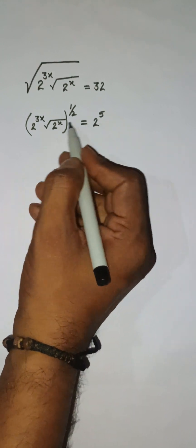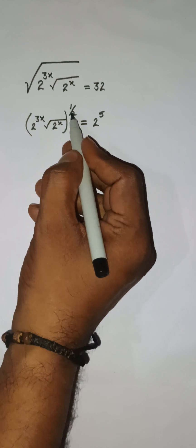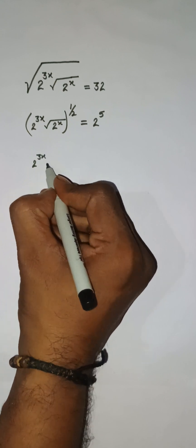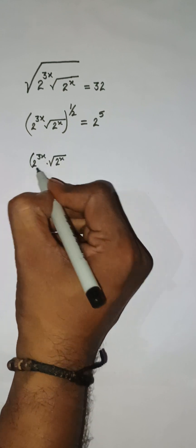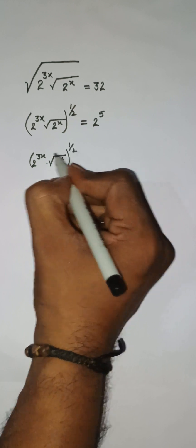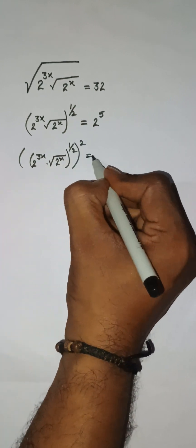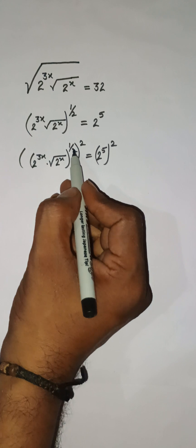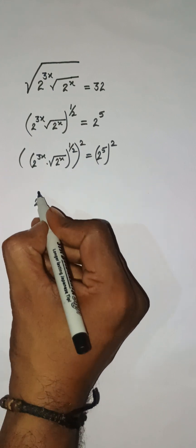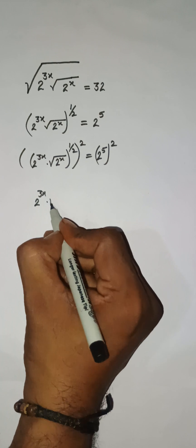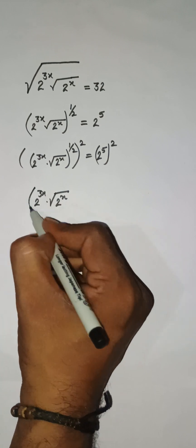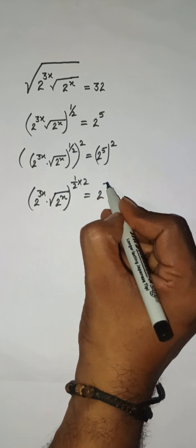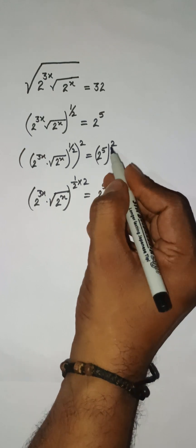Now I need to put a square on both sides to remove this square root. So I'm putting a square on both sides. We have 2 to the power 3x into root under 2 to the power x, with power 1 by 2, and I'm putting a square here, and on the right side 2 to the power 5 with a square. This power 1 by 2 and this 2 will multiply, giving 5 into 2.